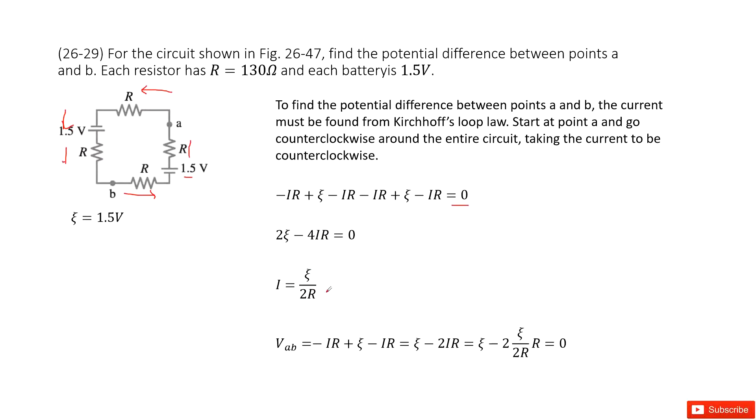Now that the current is given, we can get the potential difference between A and B. We look from A to point B. We can see this is negative I times R - voltage decreases.